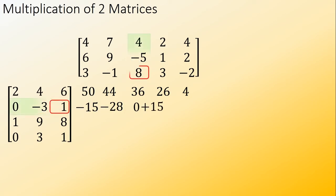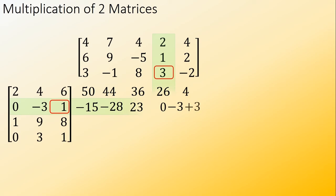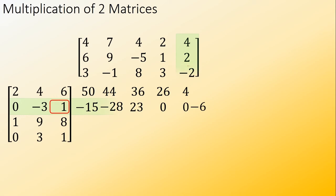1 times 8 equals 8, and then adding them equals 23. Next: 0 times 2 equals 0, negative 3 times 1 equals negative 3, 1 times 3 equals 3, and then adding them is equal to 0. Next: 0 times 4 equals 0, negative 3 times 2 equals negative 6, 1 times negative 2 equals negative 2, and then adding them is equal to negative 8.